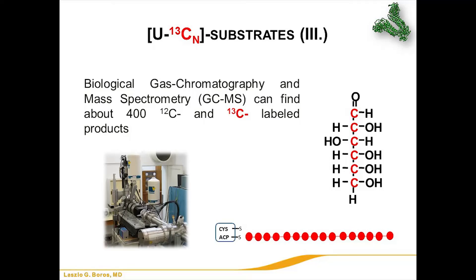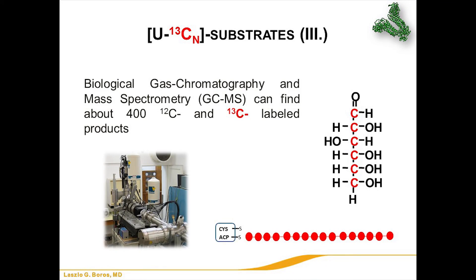How do we follow and trace these? We use mass spectrometers — biological gas chromatography and mass spectrometry (GCMS) — which can nowadays detect about 400 metabolites with 13C-labeled isotopomers, or positional isotopes. Based on what product we select, we can look at fragments and examine metabolism of glucose or palmitate very thoroughly.